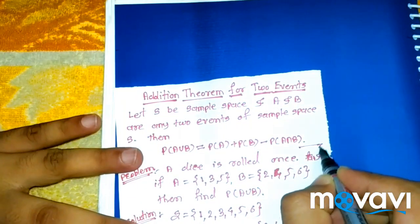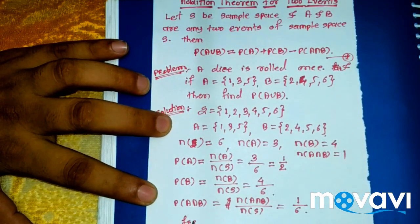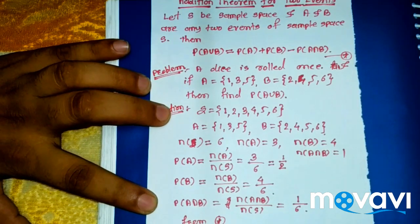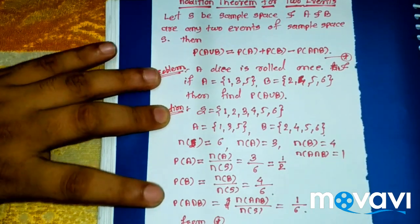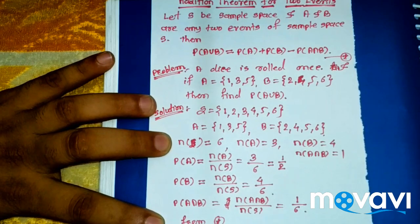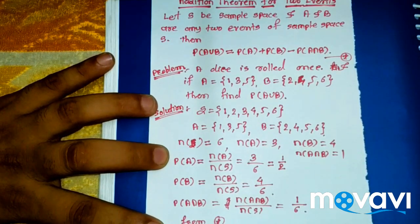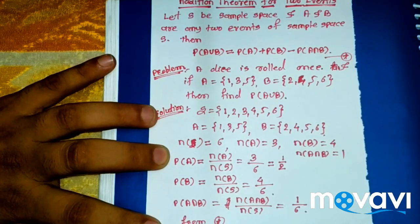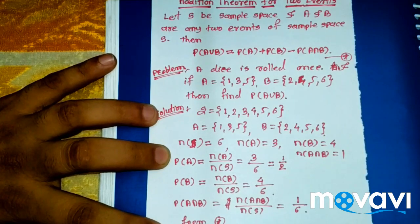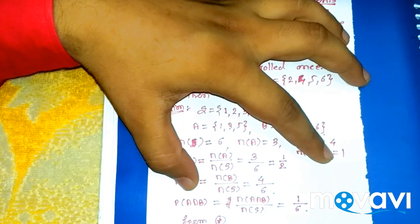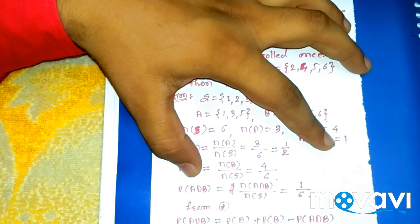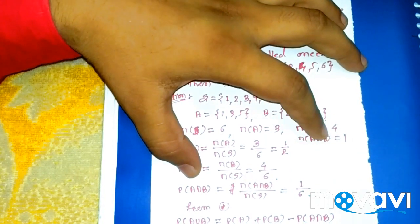Therefore, using the addition theorem: P(A union B) = P(A) + P(B) − P(A intersection B) = 3/6 + 4/6 − 1/6. So the final answer is (3 + 4 − 1)/6 = 6/6 = 1. Therefore, probability of A union B is 1.